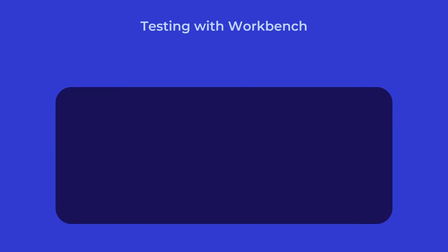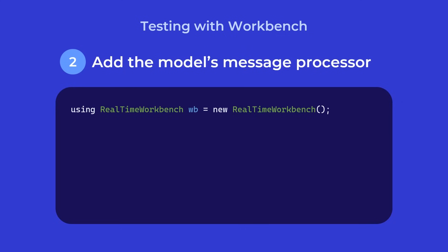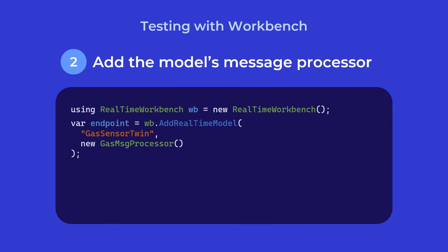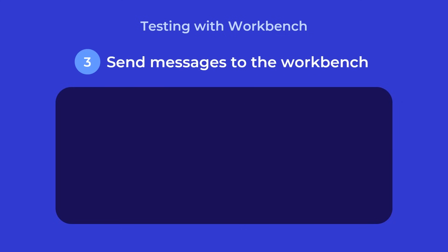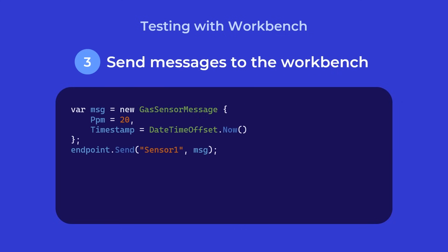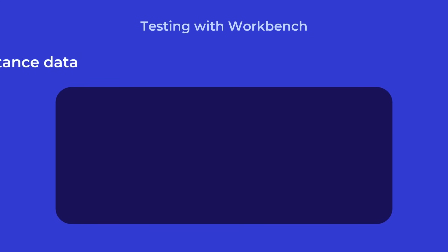Now it's time to run some tests with the workbench. In this example, we create a real-time workbench object and add the model's message processor. We send messages to the workbench and check that the message processing code updates the instance properties correctly.